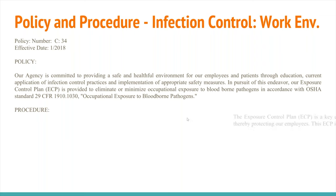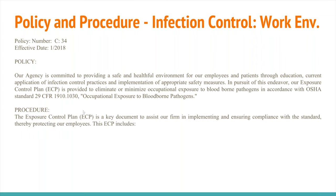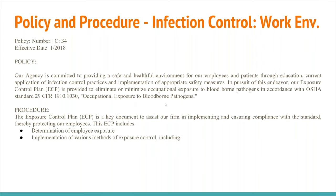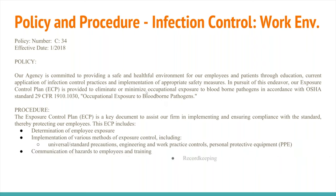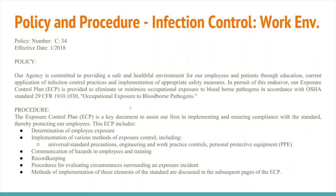The procedure reads as follows: the ECP is a key document to assist the firm in implementing and ensuring compliance with the standard, thereby protecting employees. The ECP includes determination of employee exposure, implementation of various methods of control including universal precautions, communication of hazards to employees and trainings, record keeping, procedures for evaluating circumstances surrounding an exposure incident, and methods of implementation of these elements of the standard discussed in subsequent pages of the ECP.